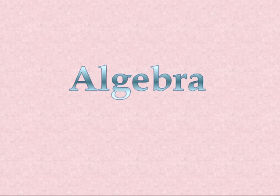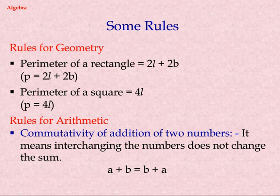Topic: Algebra. Rules for Geometry. Perimeter of a rectangle equals 2L plus 2B, written as P equals 2L plus 2B. Perimeter of a square equals 4L, written as P equals 4L.